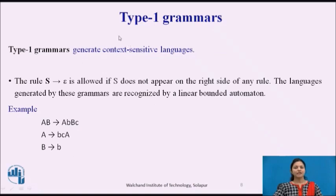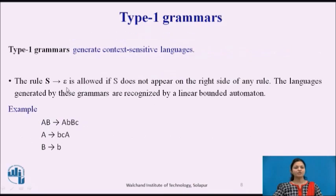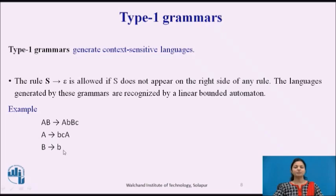In Type 1 grammar, S → null is allowed but S may not appear on the right-hand side of any rule. The languages generated by these grammars are recognized by a linear bounded automaton. Examples include: AB → ABBC, A → BCA, and B → B.